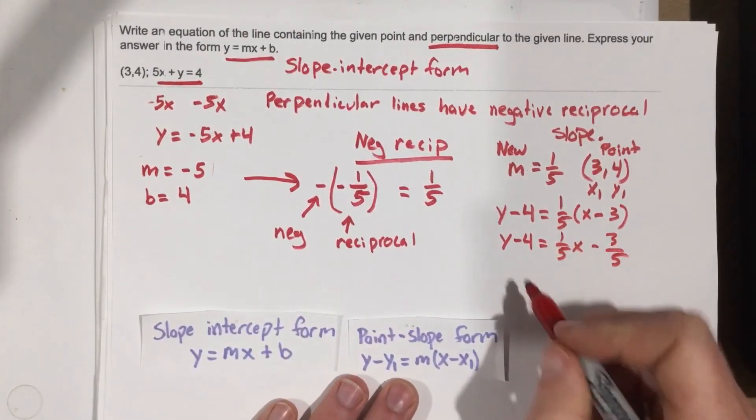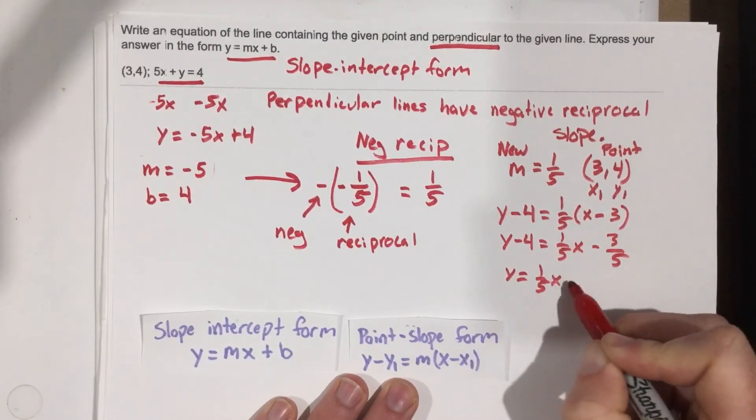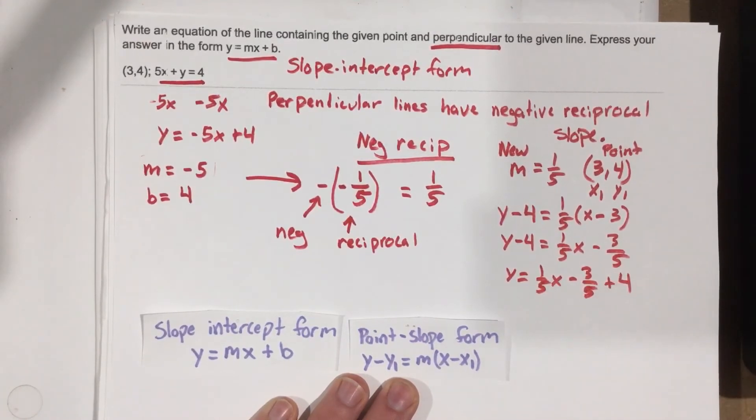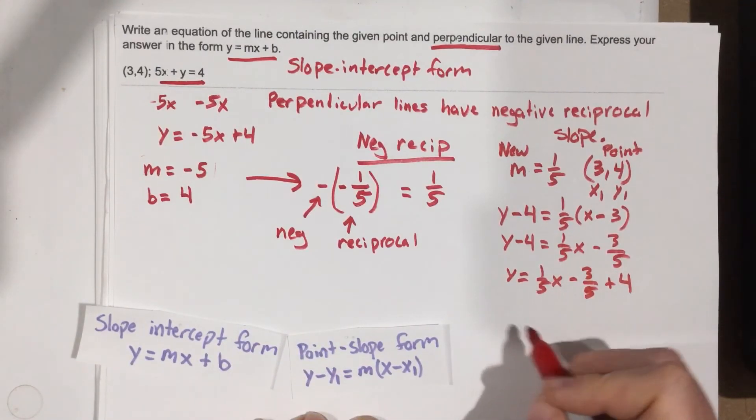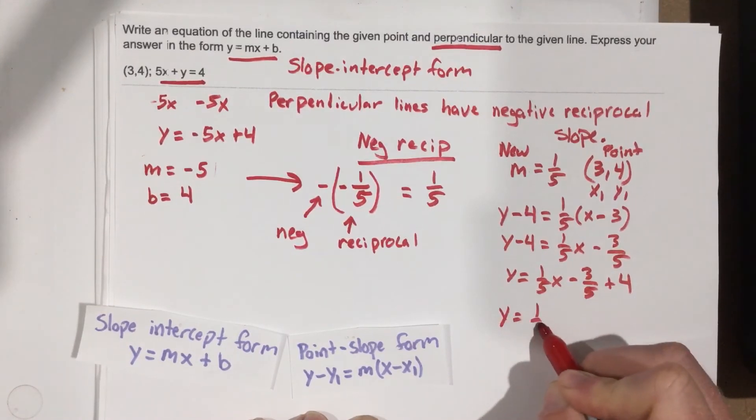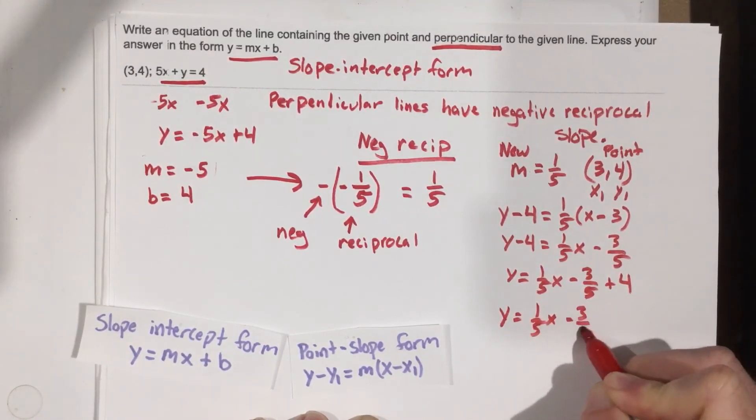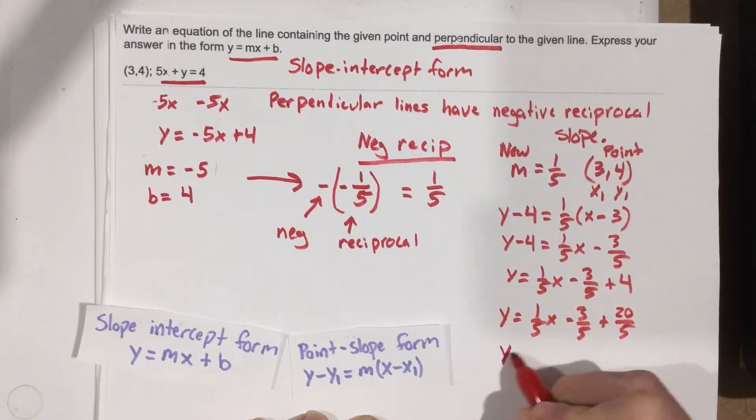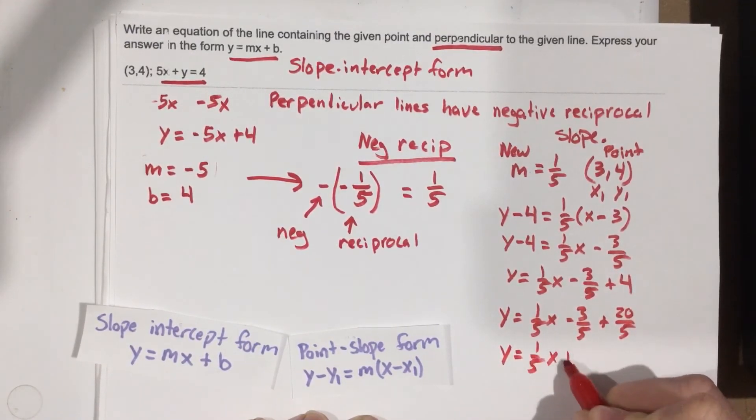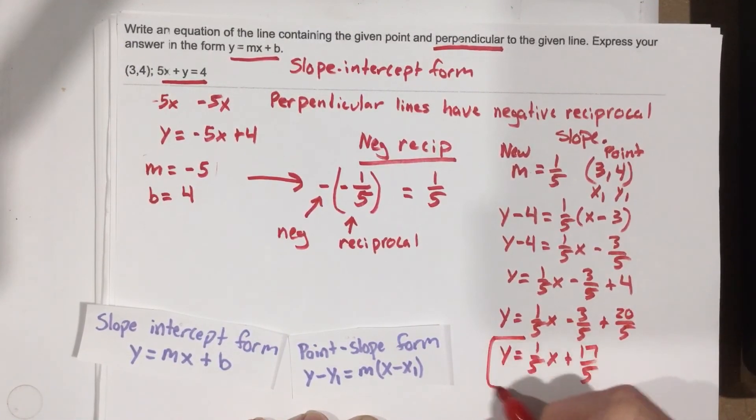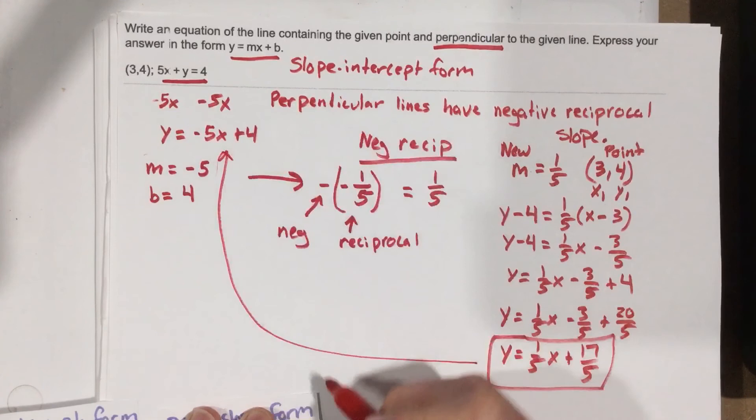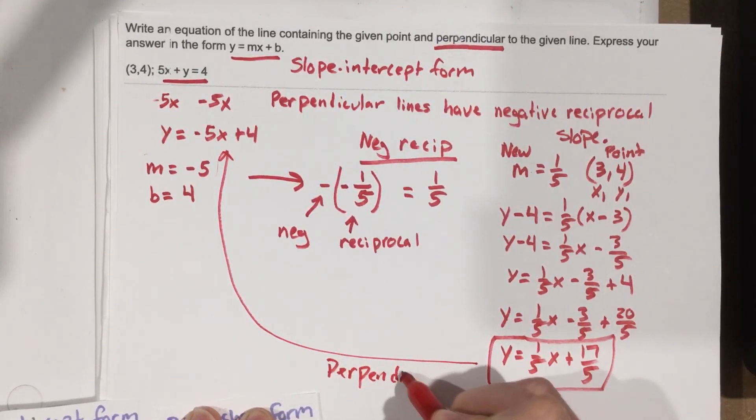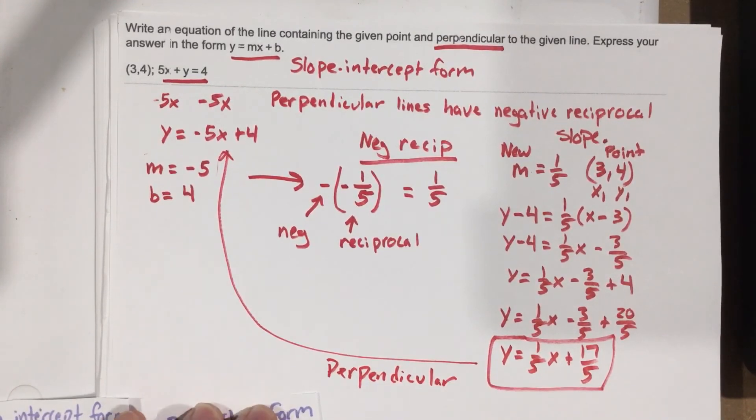Now I'm going to add the 4 over. So I get y equals 1 fifth x minus 3 fifths plus 4. If I change this into a denominator of 5, that would be 20 over 5. So I'm going to get y equals 1 fifth x minus 3 over 5 plus 20 over 5. When I combine those, I get 17 over 5 for a y-intercept. So this is the equation that is perpendicular to this other one, perpendicular and goes through this coordinate.